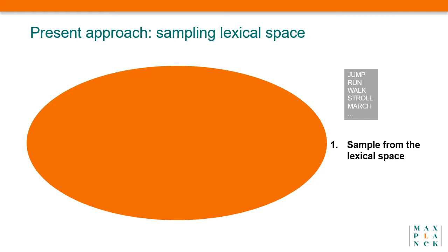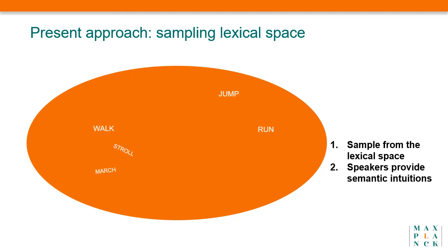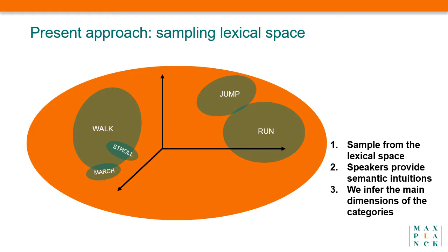This is precisely what we do in the present approach. By starting from the other end, we sample from the lexical space. We take a comprehensive list of verbs that constitutes the lexical inventory to talk about motion, and we ask speakers to organize those words in their subjective conceptual space. We are thus directly probing their representation of the whole category of reference. Speakers' semantic similarity intuitions give us what they perceive to be the most salient dimensions in the lexical domain. Note that it is much more feasible to comprehensively sample the lexical space than the perceptual space, because there is a limited number of words, whereas there are infinite actions to which they can refer.